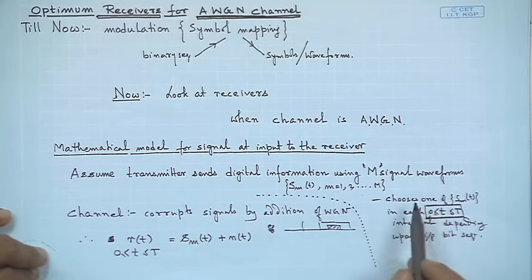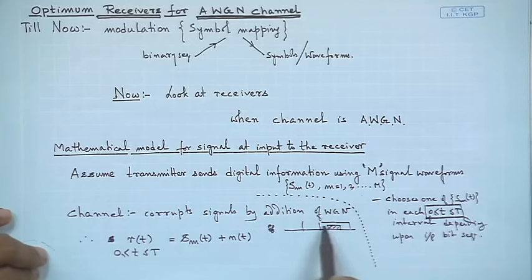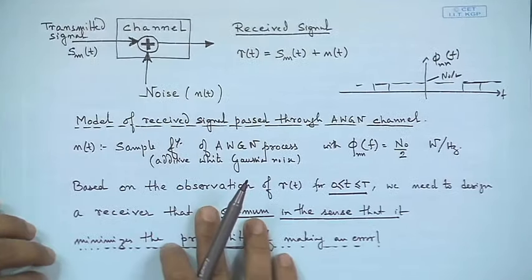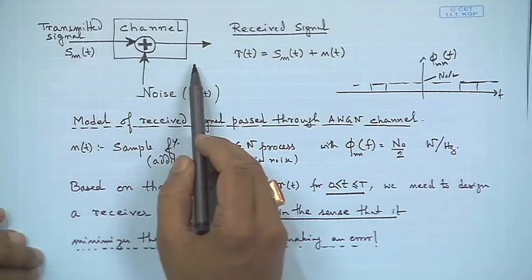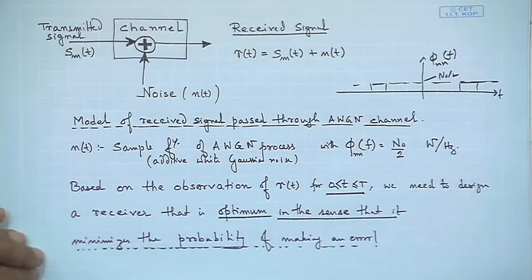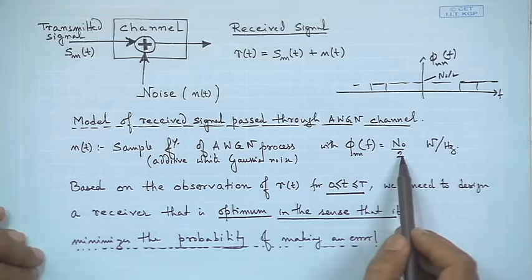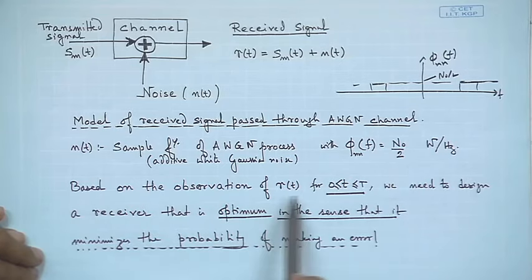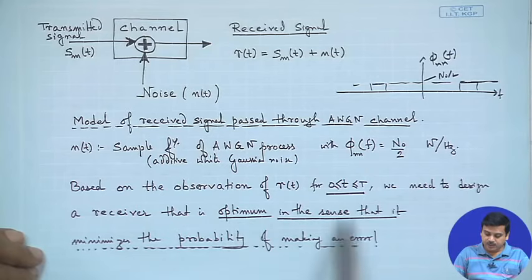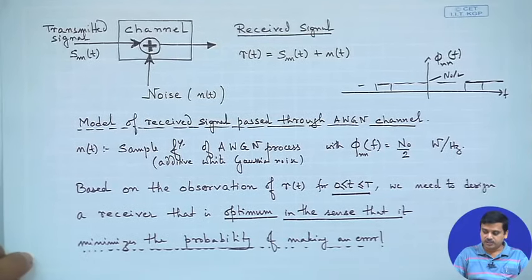The noise is called white because the receiver uses a filter which is much wider than the signal bandwidth, and the noise is spectrally white in that portion. The receiver sees the signal in the time interval 0 to T — that is, in each symbol interval. We described the noise with power spectral density N₀/2, and based on the observation of R in the interval 0 to T, we want to design a receiver that minimizes the probability of making an error.